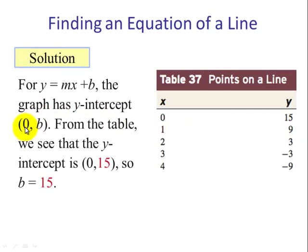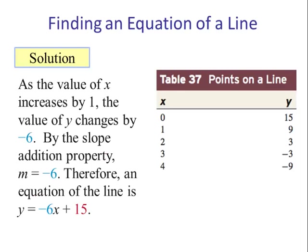Now from the table, the y-intercept b: x is always 0, and it's the value of y. So when x is 0, we see that y is 15, so 15 is our b. Now we need to determine the slope. We know that as x increases by 1, the slope is how the y is changing. So as x increases by 1, the y value actually decreases by 6. So therefore the slope is negative 6 over 1, or negative 6. So the equation would be y equals negative 6x plus 15.